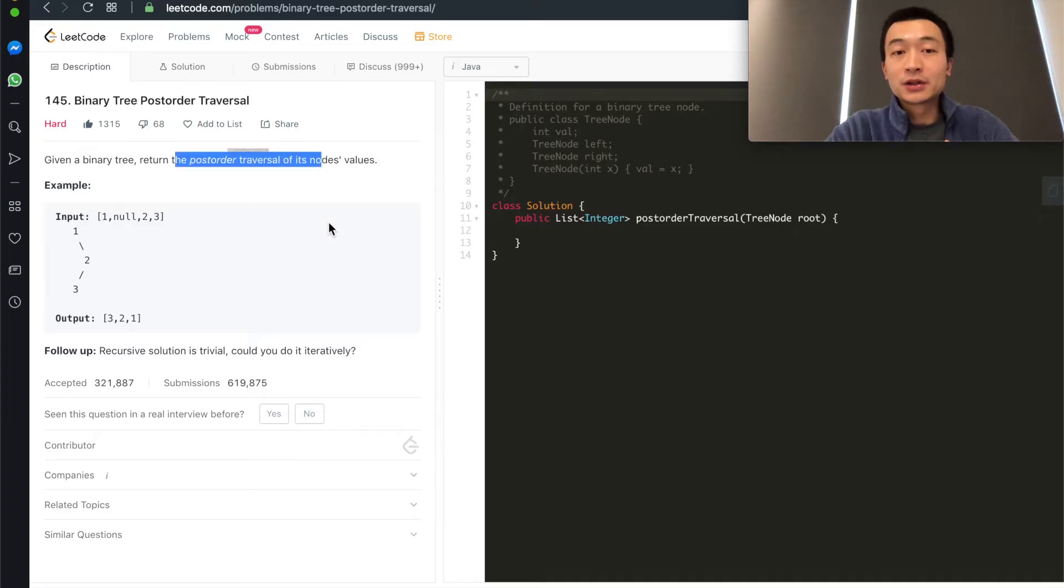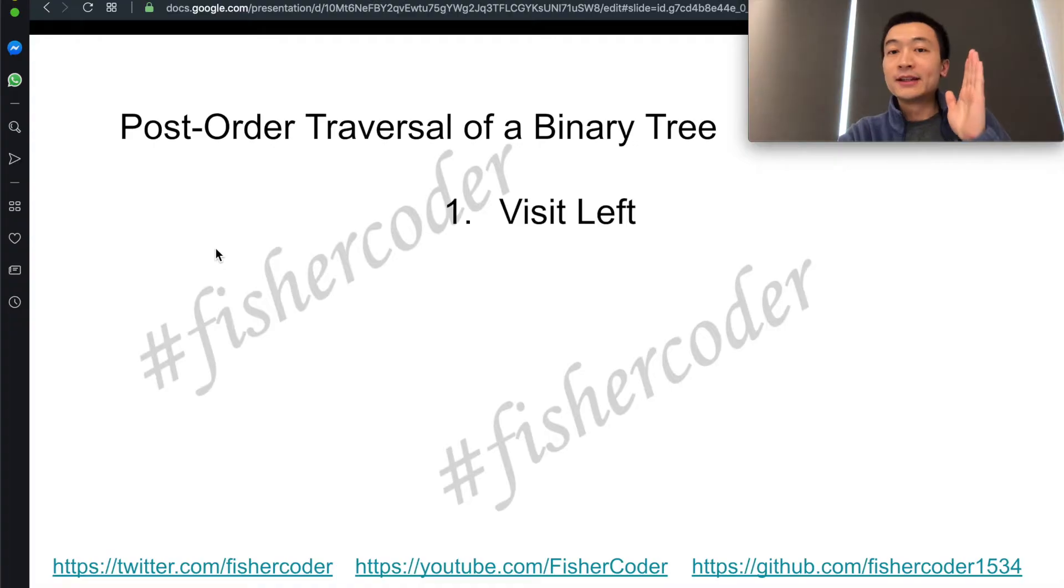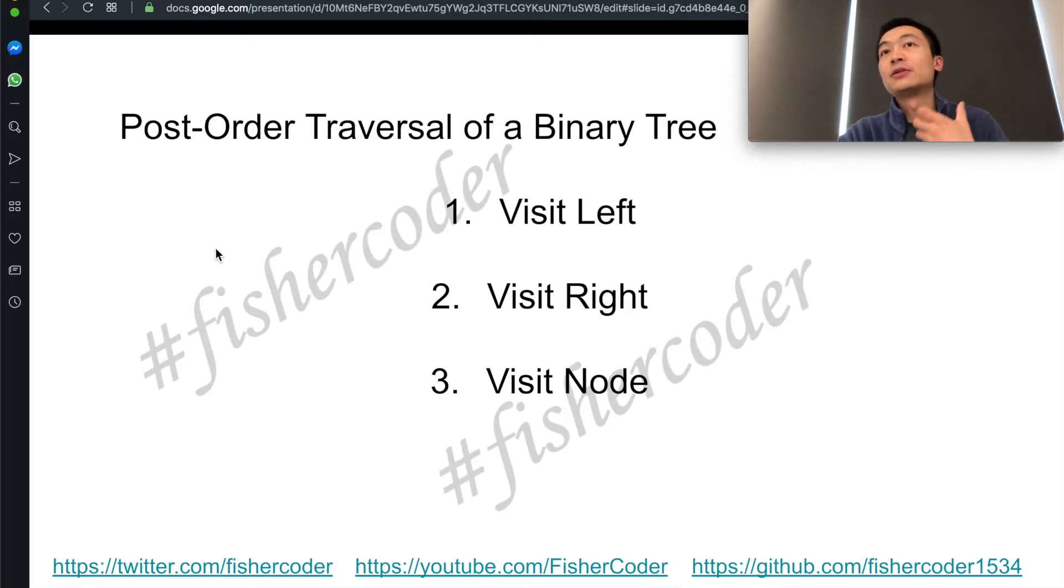Given a binary tree, return the post-order traversal of its node's values. So we're given this tree 1-null-2-3. The output is 3-2-1. First, we'll have to understand what does post-order traversal mean. We'll have to follow the order of left, right, and node. This is the order that we need to follow in order to make a post-order traversal of a binary tree.